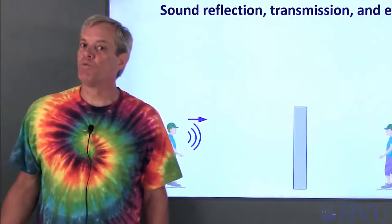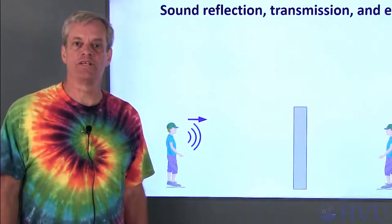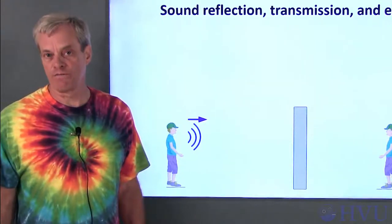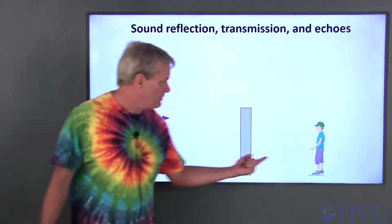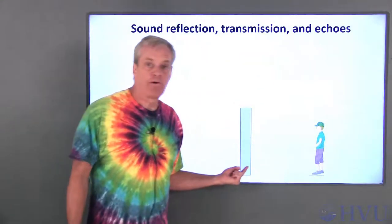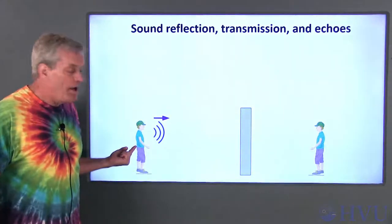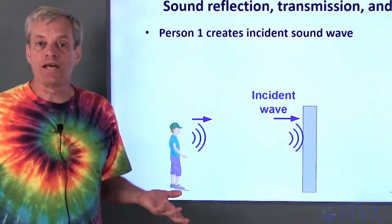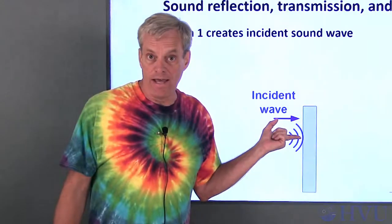Another more common example of wave reflection and transmission is when sound reflects off of a surface to create an echo. I have two people separated by a wall. Person one makes a sound. The initial sound wave is called the incident wave.